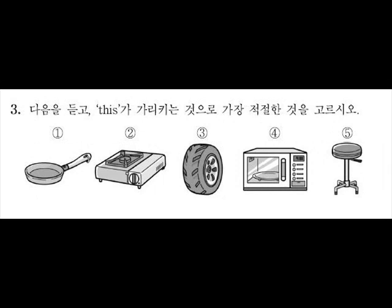3번. 다음을 듣고 디스가 가리키는 것으로 가장 적절한 것을 고르시오. You can see this in a kitchen. Usually, this is round and has a handle. You can put this on the stove and make pancakes or fried eggs with this. This gets really hot when you cook. What is this?